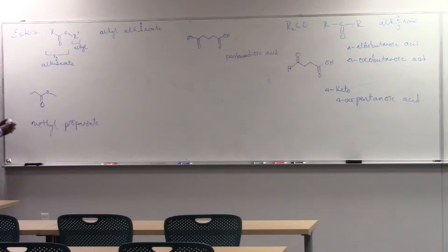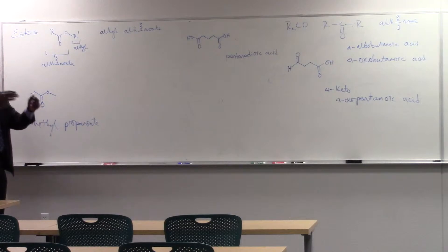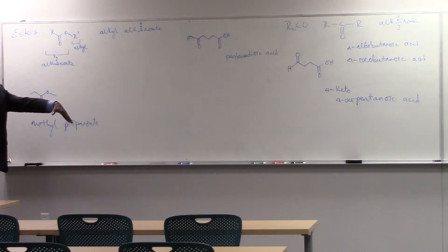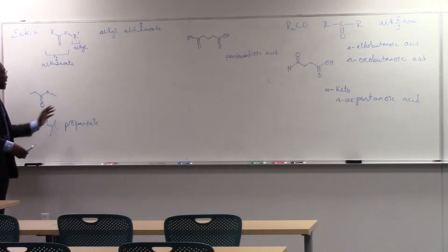Because if I imagined there was an H here, I would just call this propanoic acid. So the same way nitric acid gives nitrate, and sulfuric acid gives sulfate, and perchloric acid gives perchlorate. Alkanoic acids give Alkanoate. Propanoic acid gives propanoate.